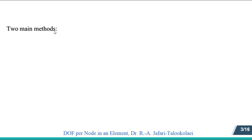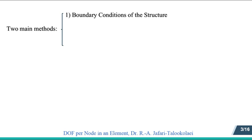There are two main methods to recognize the degrees of freedom for each node in an element. The first method is based on the boundary conditions of the whole structure, and in the second method we use the strain potential energy of the considered element.